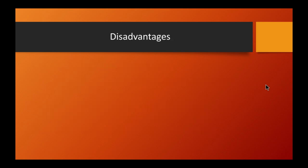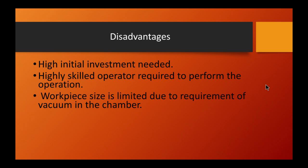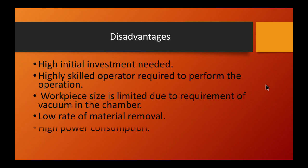Disadvantages of electron beam machining are: high initial investment is needed; a highly skilled operator is required; workpiece size is limited due to the requirement of vacuum in the chamber; there is a low rate of material removal; and high power consumption.